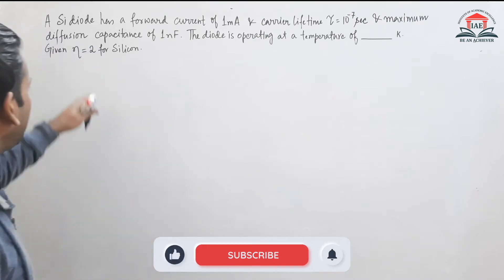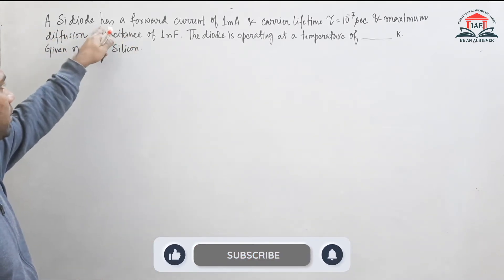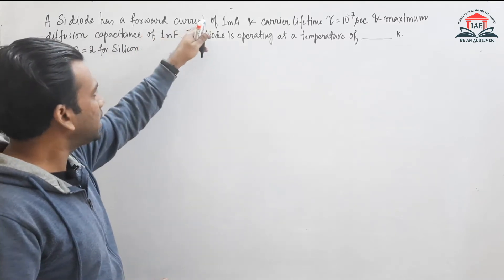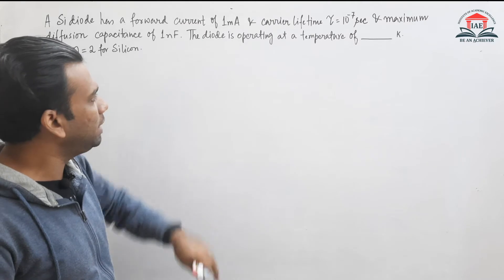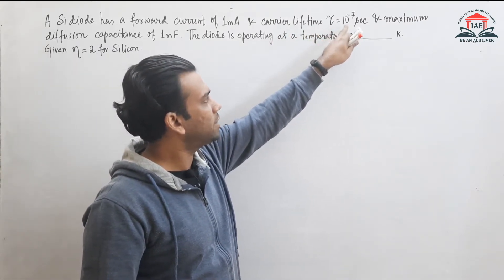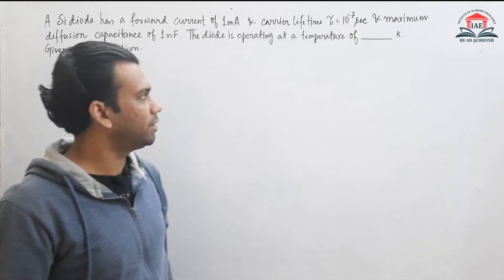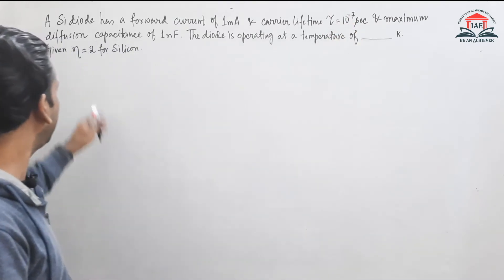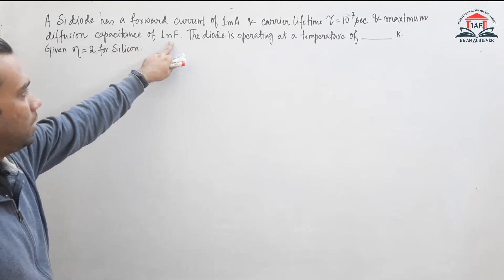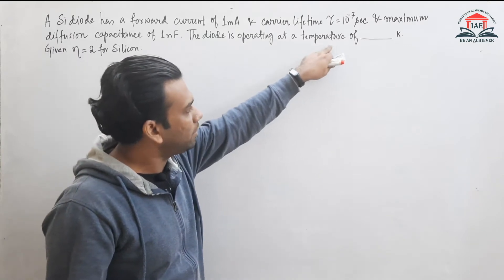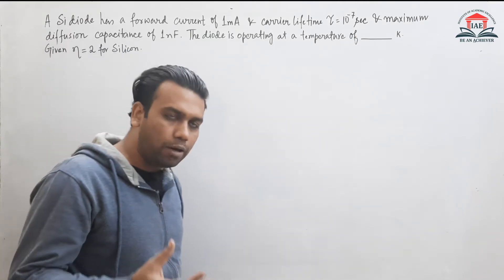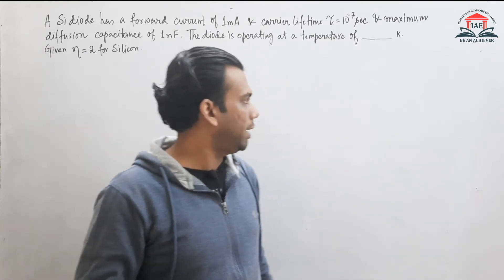So, in this numerical, a silicon diode has been given with a forward current of 1 milliampere. The carrier lifetime tau is 10 to the power minus 7 seconds, and the maximum diffusion capacitance is 1 nanofarad. We need to find at what temperature the diode is operating.